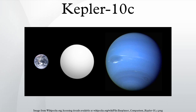Kepler-10c has a mass of 15–19 Earth masses. With a radius only 2.35 times that of Earth, and a density higher than Earth's, it is unlikely to contain significant amounts of hydrogen and helium gas. Out-gassed or accreted hydrogen-rich atmospheres would have been lost over the 10.6 billion-year lifetime of the Kepler-10 system. Instead, the composition is likely to be mainly rocky, with a water fraction of 5–20% by mass. The bulk of this water is likely to be in the form of high-pressure hot ice phases.